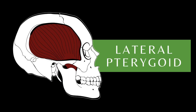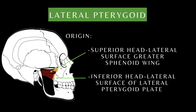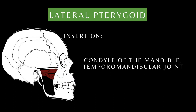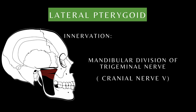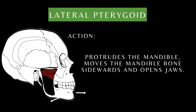Lateral pterygoid: the superior head arises from the lateral surface of the greater sphenoid wing, while the inferior head originates from the lateral surface of the lateral pterygoid plate. It inserts into the condyle of the mandible and the temporomandibular joint. It is innervated by the mandibular division of the trigeminal nerve. It functions to protrude the mandible, move the mandible sideways, and open the jaws.